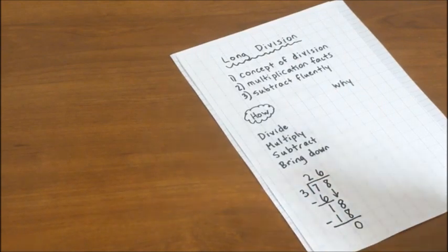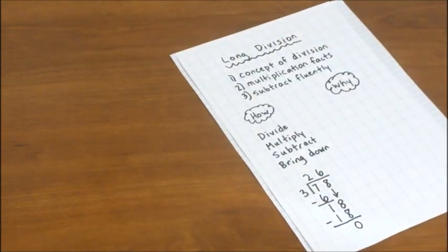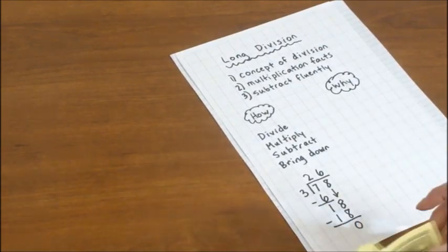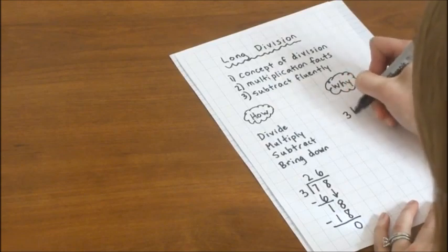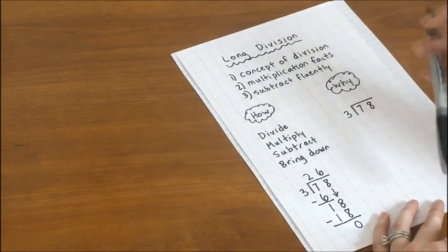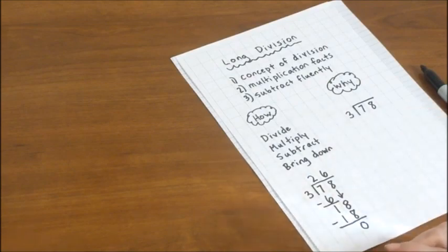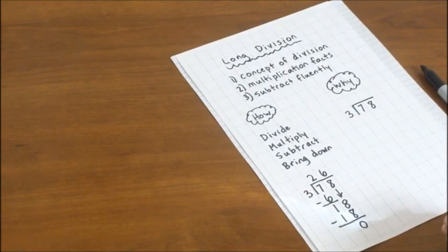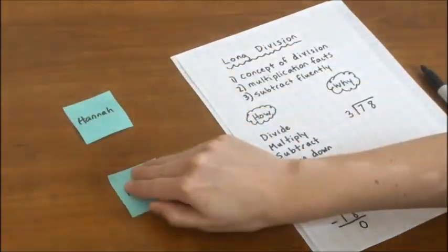But now let's get into the why. Why does this work? And to understand this, we are going to use monopoly money. I'm going to get 7, we're going to do the same problem, 78 divided by 3. And we're going to follow the same steps. But we're going to make it more concrete and easier for kids to imagine and visualize so that they'll understand why all the steps work. So we're going to make this a problem about 3 kids dividing $78 among them. Maybe Grandma stuck a whole lot of money in a Christmas card or something.